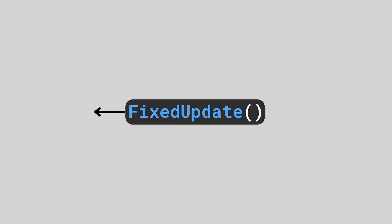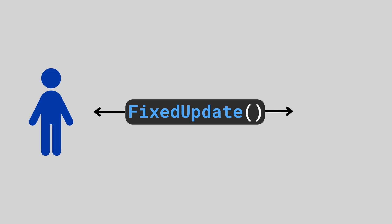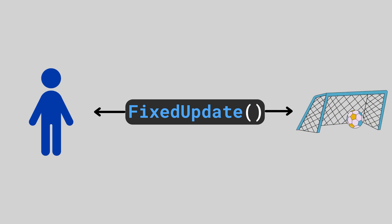Notice I said non-physics-based movement. For FixedUpdate, it makes sense to include physics-based logic, because the behavior is consistent — it's not affected by frame rate and it's in line with the physics engine updates. This would include things like Rigidbody movement, checking for collisions, and adding force.